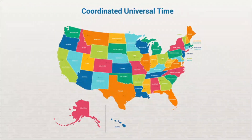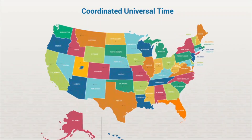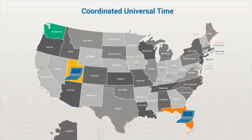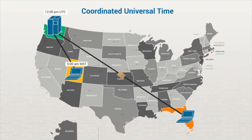The cool thing about NTP is that it's incredibly accurate. Instead of using time zones, NTP uses Coordinated Universal Time, or UTC. Each device is responsible for converting the time to its local time zone. NTP sends time data through UDP packets to all connected devices, and the devices can be synced up within two milliseconds of each other.